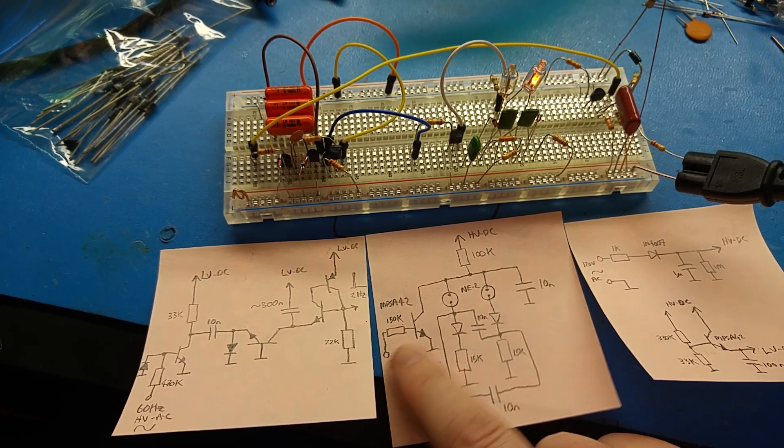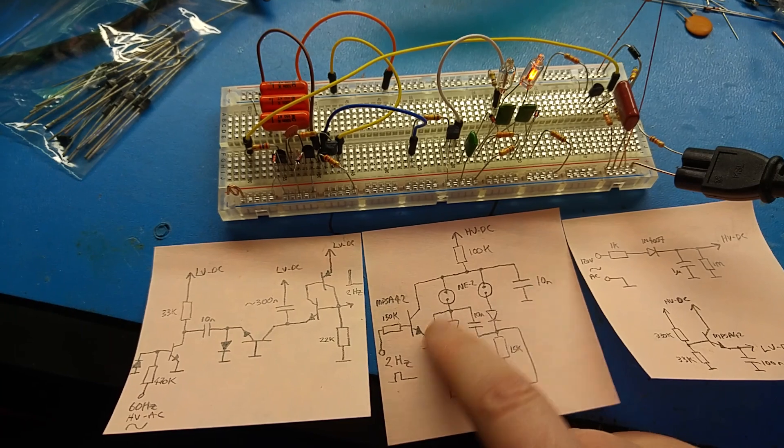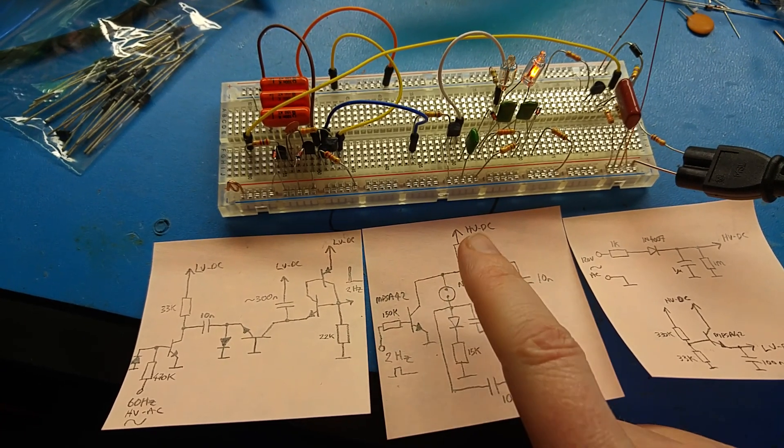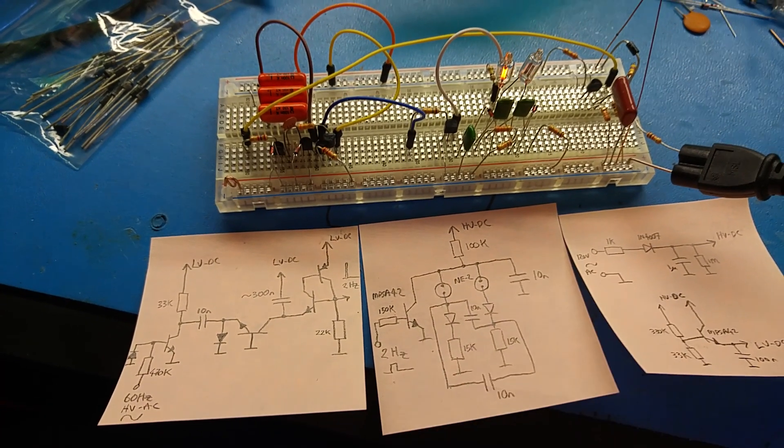So yeah, 2-hertz pulse, needle pulse, essentially comes into here, removes the supply voltage and then lets it recover, and it will flop from one neon to the other.